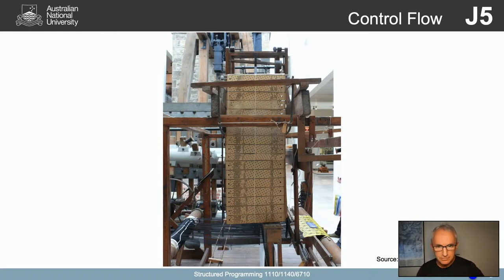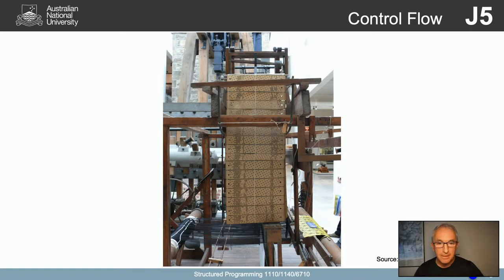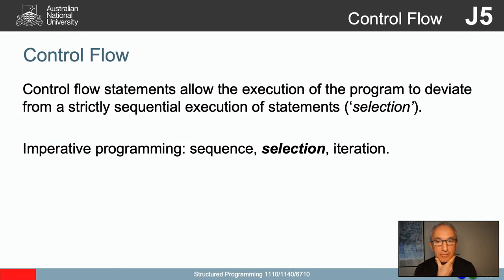Back to the Jacquard loom. This is a close-up of the cards that feed into the loom — those cards are full of holes, and those holes are controlling how the loom operates. As each step goes through it moves the loom in a different way, producing a different pattern. You can see very clearly the notion of sequence: each one of those cards is a separate step, basically a separate line of thread in the carpet.